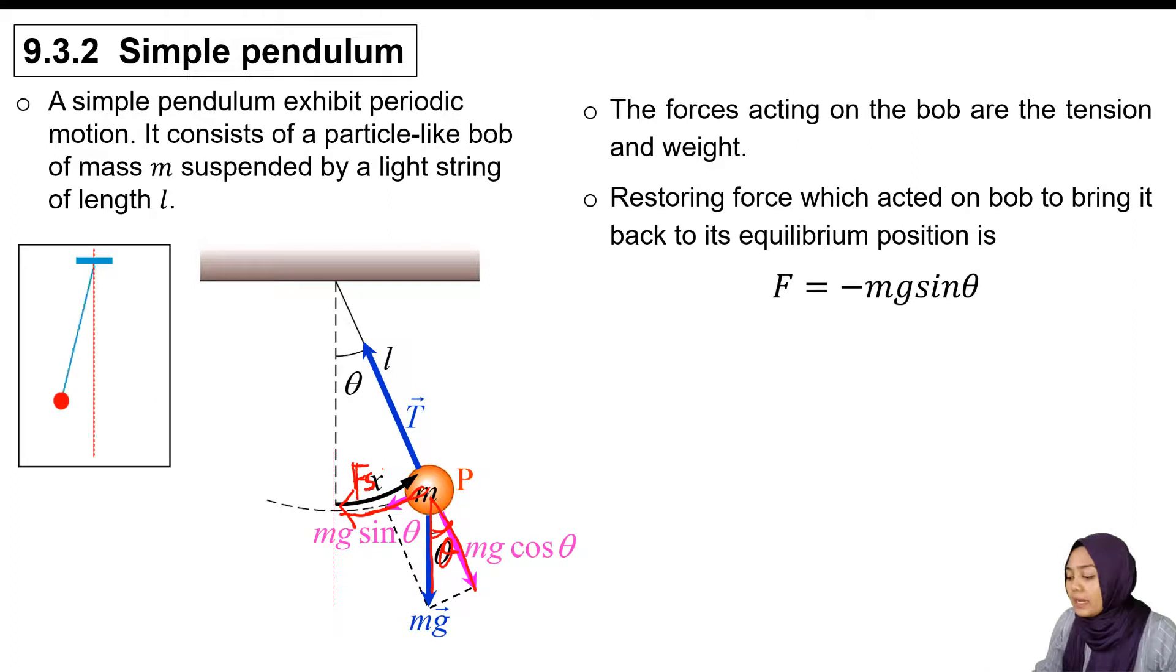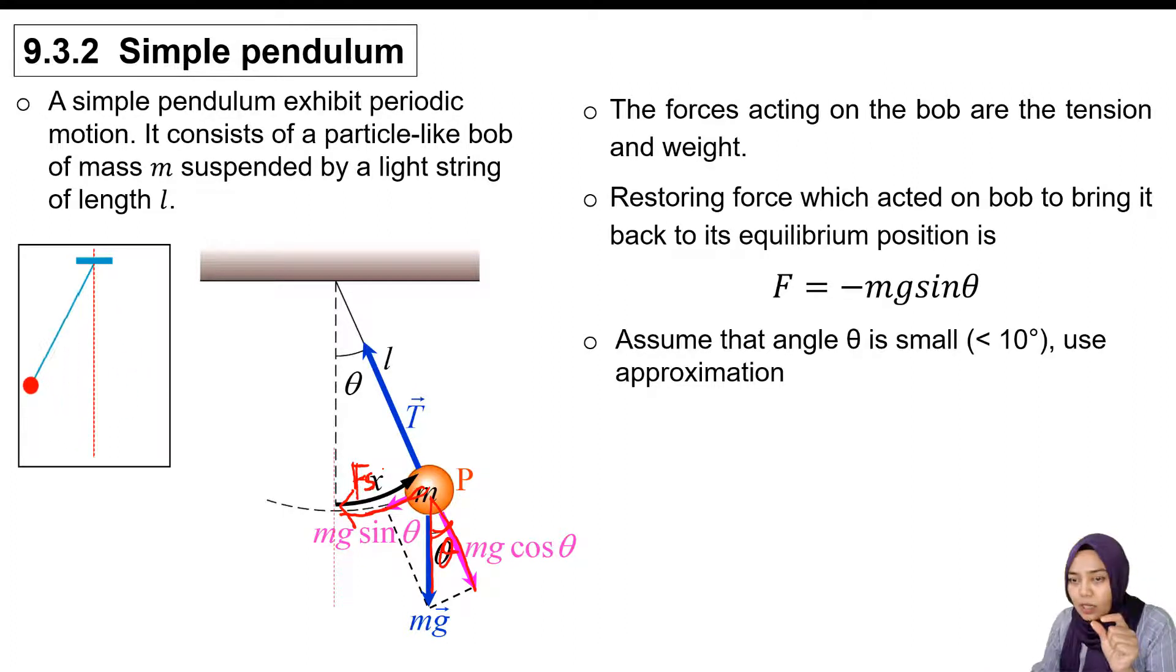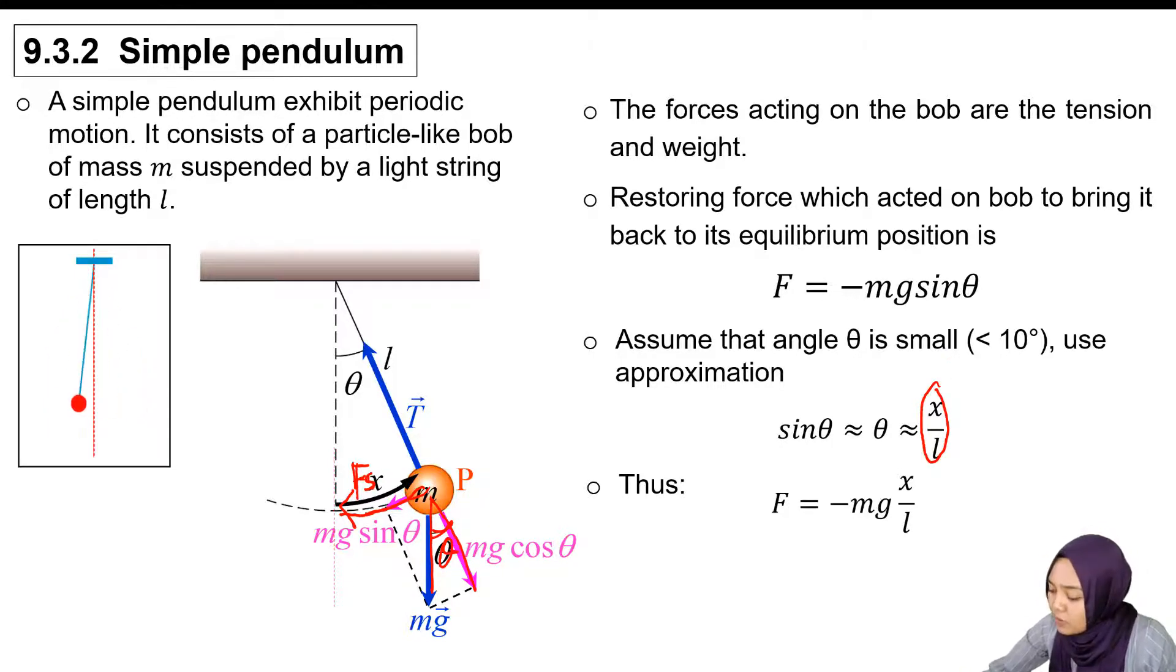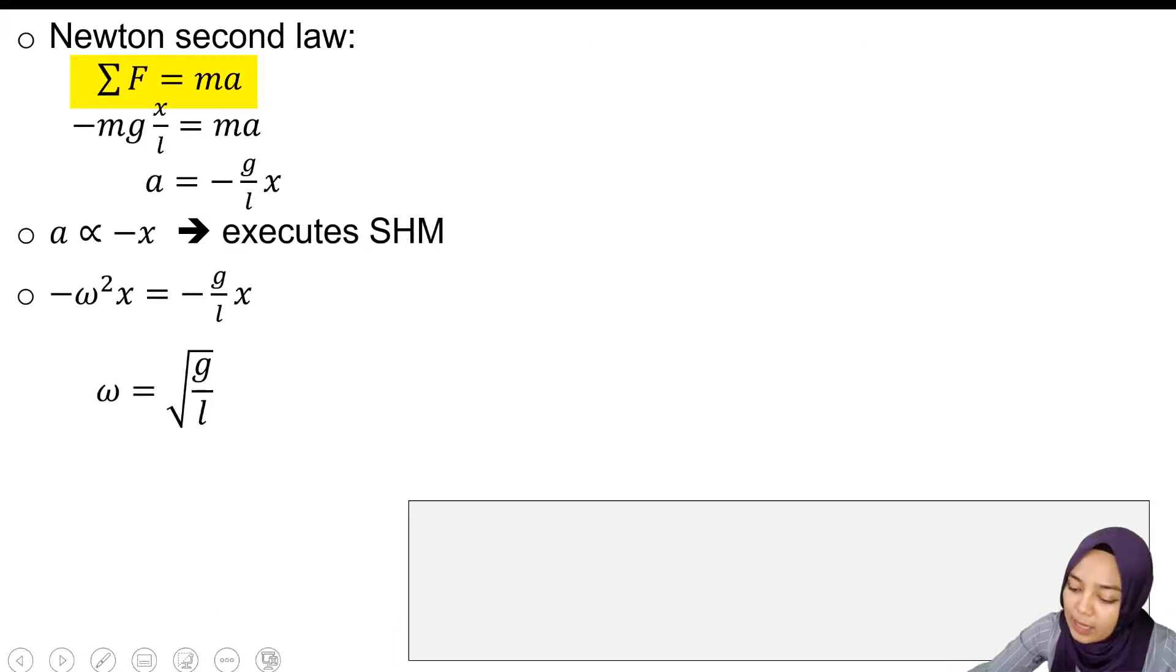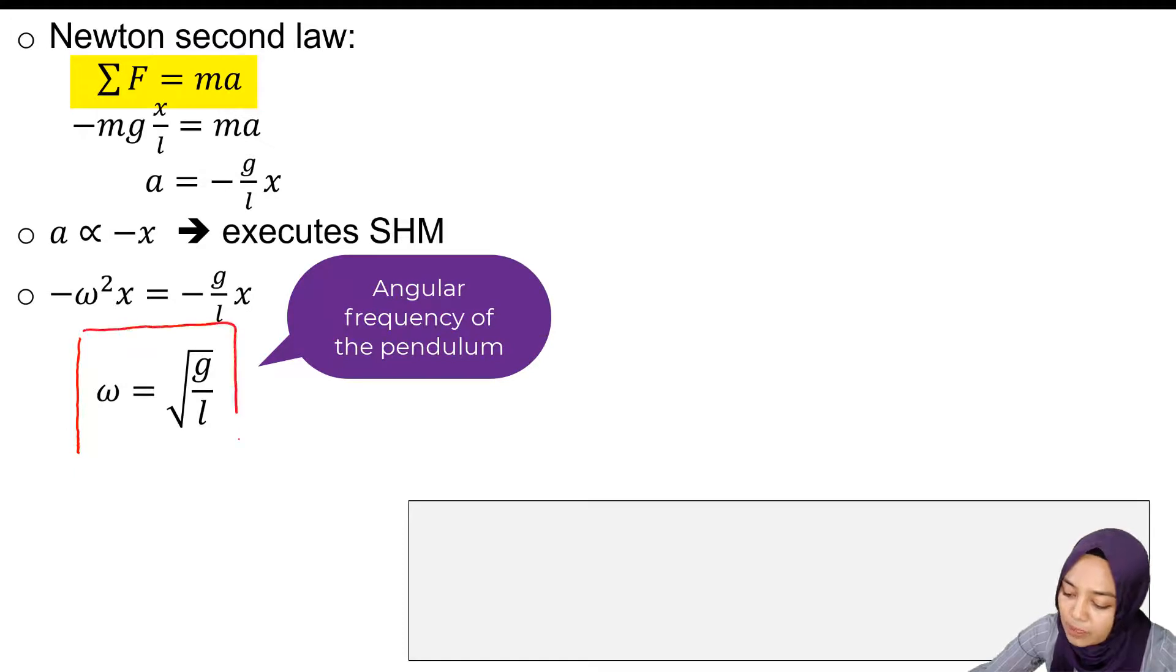When we assume that the angle is small, sin θ ≈ x/l. We substitute sin θ as x/l and put in Newton's second law of motion. We can get the angular frequency for this pendulum as ω = √(g/l).